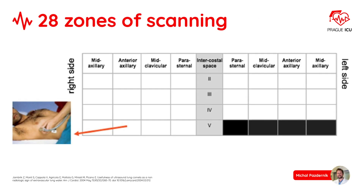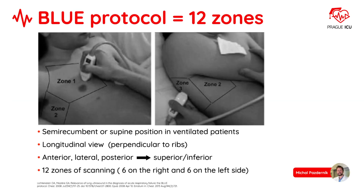We can use different approaches in terms of the number of scanned zones. Basically, the more zones we scan, the more detailed result we get. One approach analyzes up to 28 zones — 6 in the right hemithorax and 12 on the left side. In contrast, the BLUE protocol is based on 12 scanning zones, where anterior, lateral, and posterior zones are each divided into superior and inferior parts.